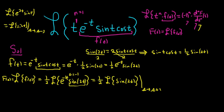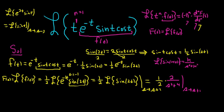Here it's s to s minus negative 1, so it becomes s plus 1. So this equals one half times the Laplace of sine 2t with the shift applied. The Laplace transform of sine kt is k over s squared plus k squared — I remember this because cosine has an s on top, so sine has a k. That gives us 1 over s squared plus 4, and applying the shift s to s plus 1, we get 1 over quantity s plus 1 squared plus 4.